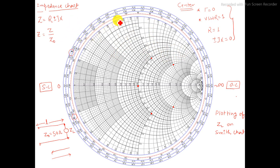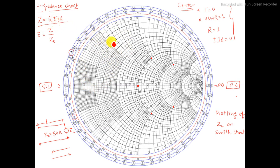So as you can see, if I talk about the impedance chart on the Smith chart, any possible impedance value given as Z equals r plus or minus jx can be plotted on this Smith chart. Z has two parts — r plus or minus jx — one real part and one reactive part.